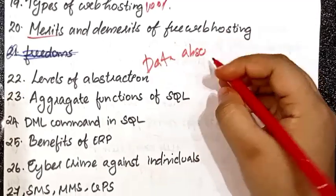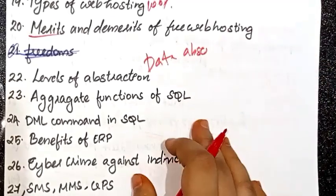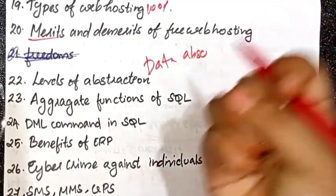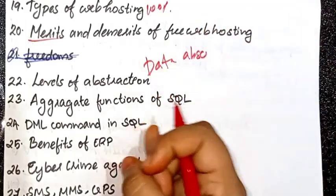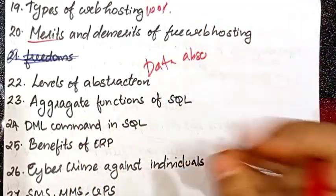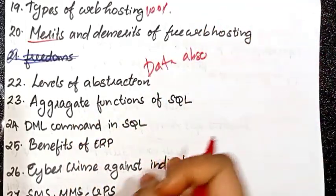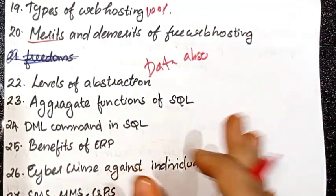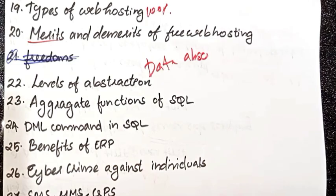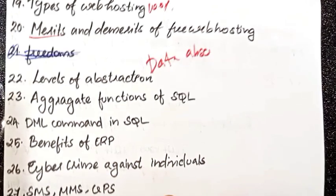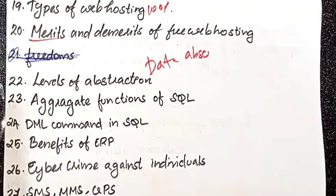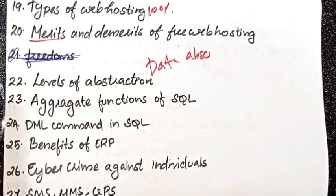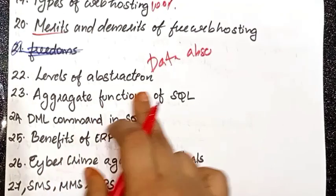Let's talk about levels of abstraction in the chapter — data abstraction. Let's talk about levels of abstraction: physical level, logical level, and view level. Let's talk about conceptual level. Then next, when we look at aggregate levels of abstraction.